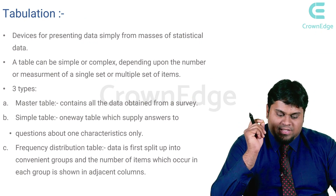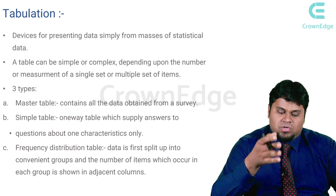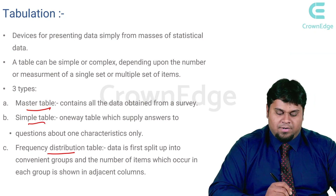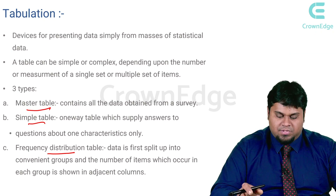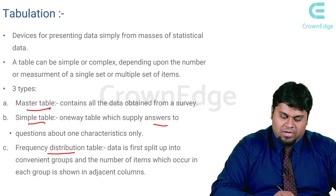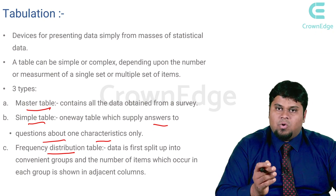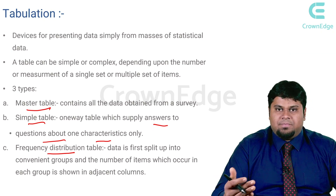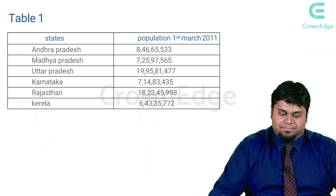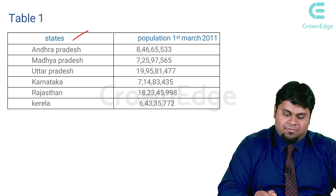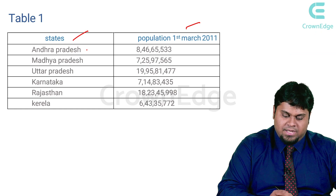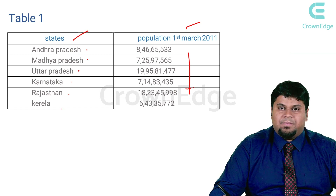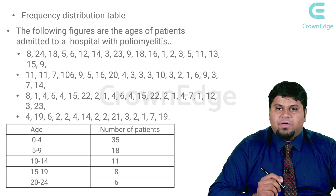For tabulation of data, you can draw a table which can be simple or complex depending on the number of measurements. There are three types: the master table contains all data obtained from the survey; the simple table is a one-way table answering questions about one characteristic only; and the frequency distribution table splits data into convenient groups showing the number of items in each group. For example, a table showing Indian states and their populations is a simple representation of data.